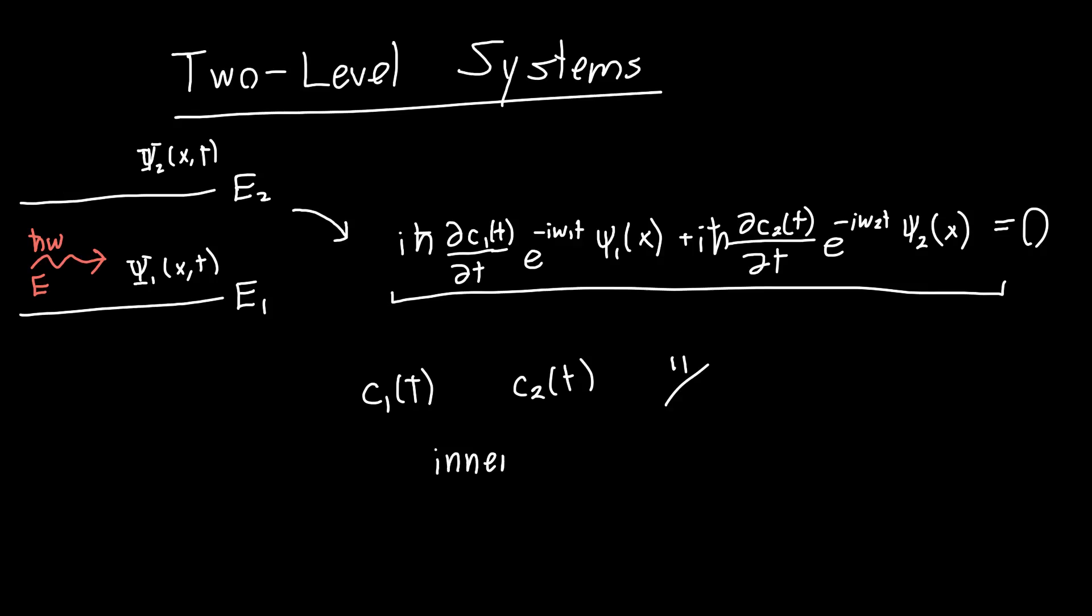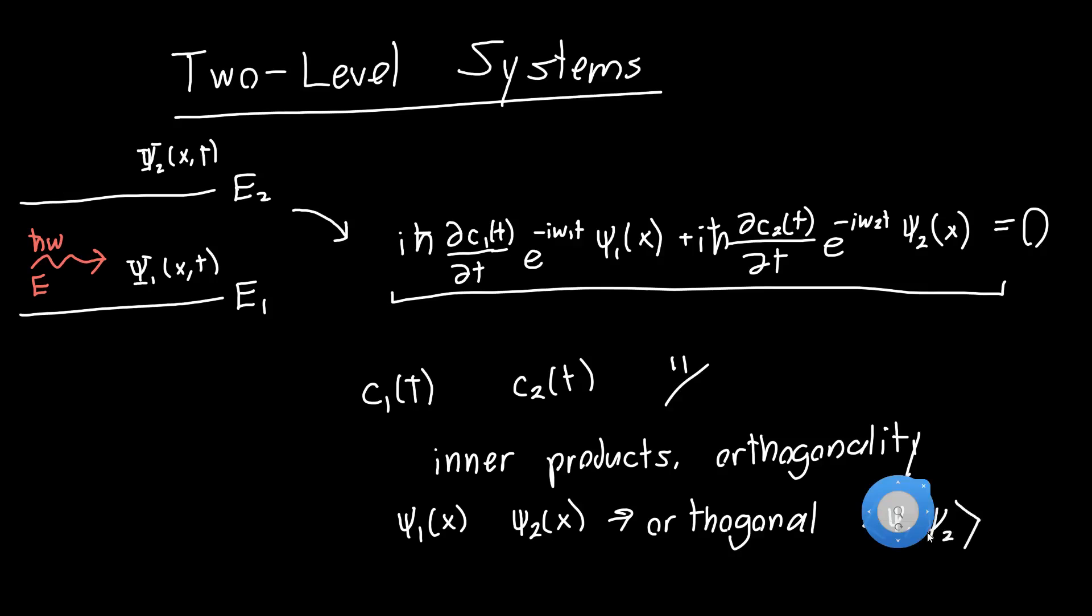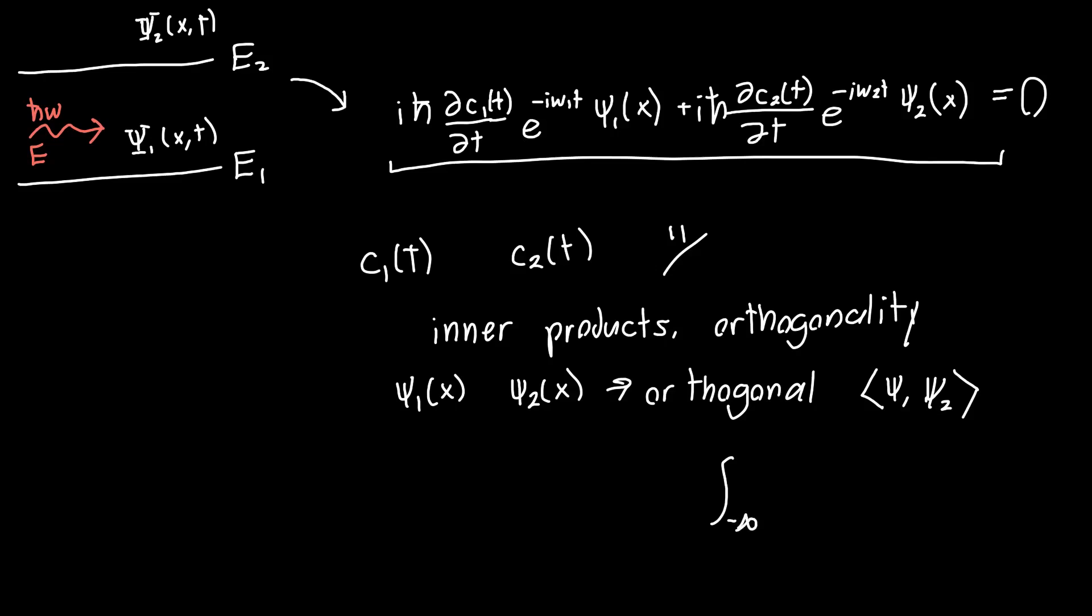But what we can do is use what we've used in previous videos about inner products and about orthogonality to split this equation up into two separate equations. And so all we need to do is know that psi1 and psi2, these two functions are orthogonal. And so if we take their inner product, ⟨psi1, psi2⟩, or equivalently we integrate them from minus infinity to infinity, psi1 conjugate times psi2, we should get zero because they are orthogonal.